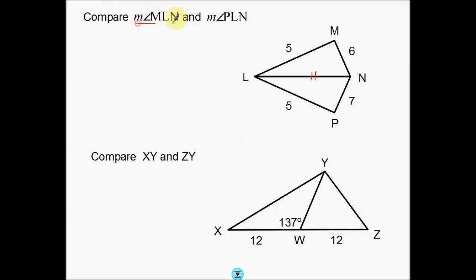Now what I'm going to do is color code these. MLN right here is going to be our red angle. And then PLN — the other one we're going to compare with — PLN is going to be right here. So instead of saying MLN and PLN, I'm just going to say the red angle and the blue angle — it makes it a little bit easier.